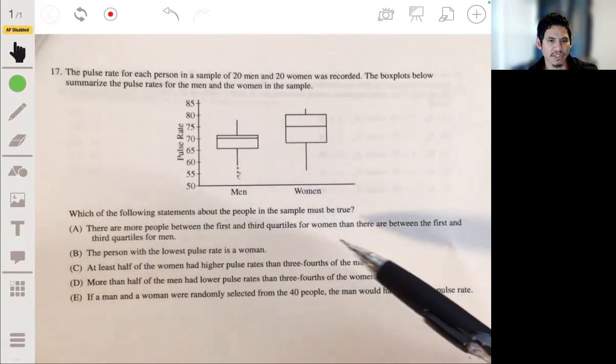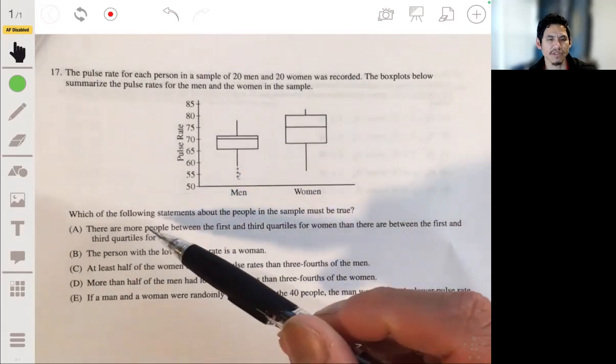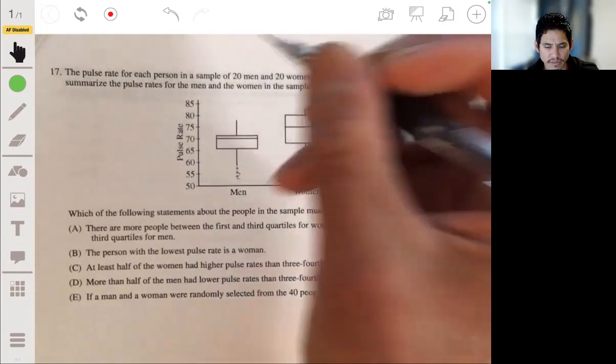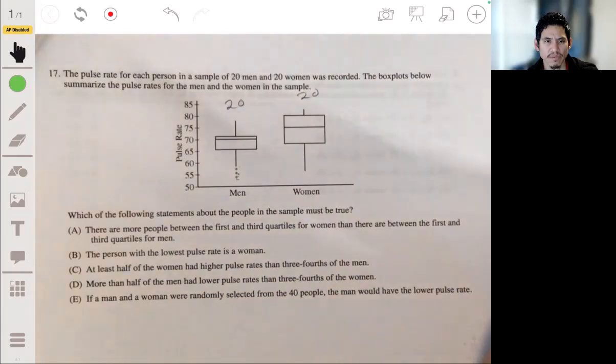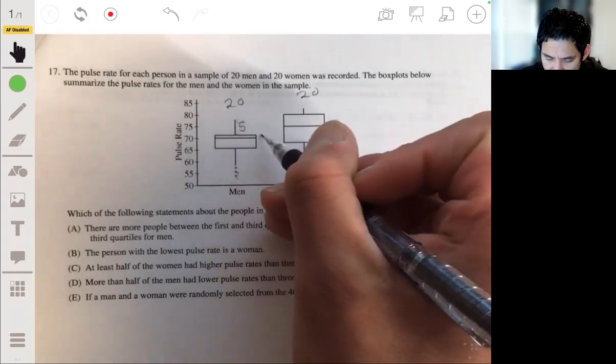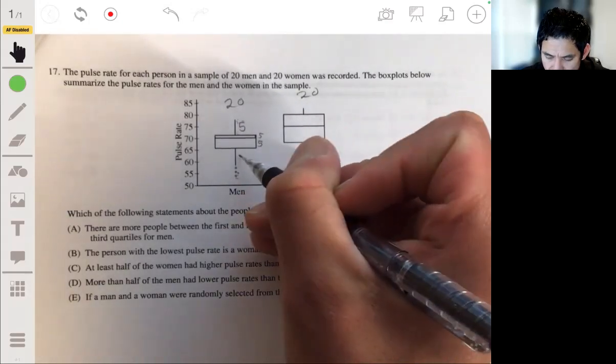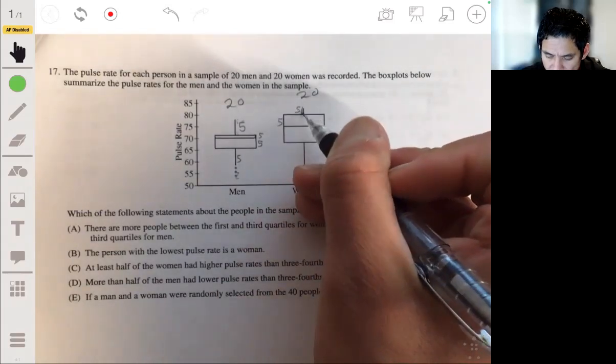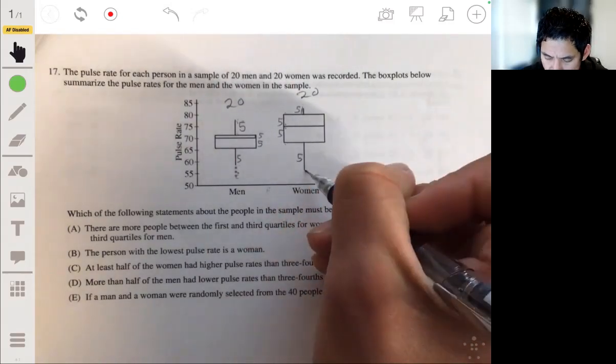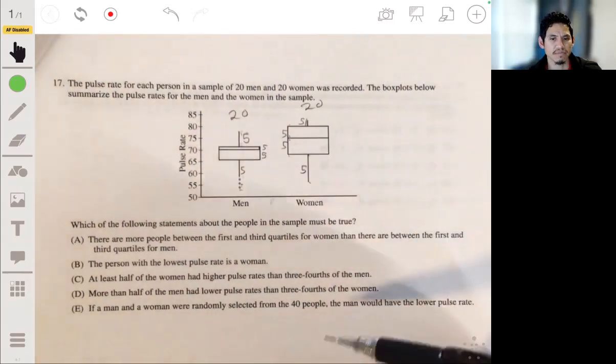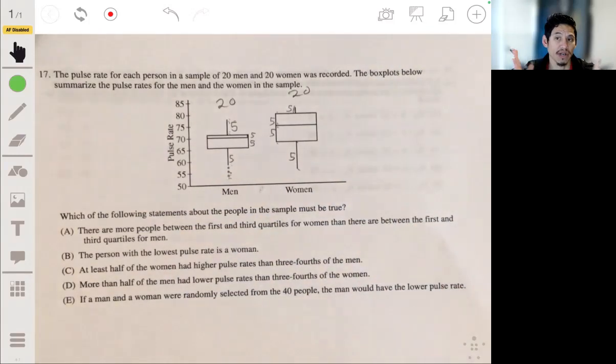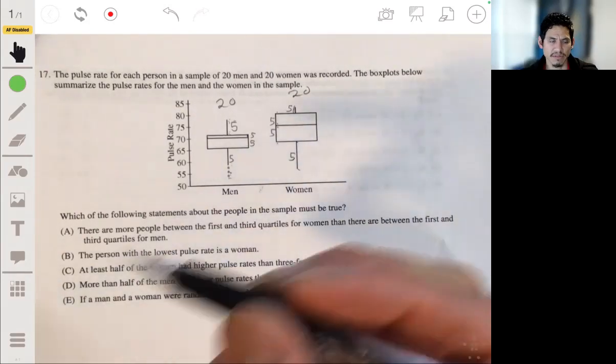There are more people between the first and third quartiles for women than there are between the first and third quartiles for men. Well, each group has 20 people, and there's five in each of those 25 percentiles. Five in here, five in this little spot, five in there, and another five in there. And women: five in here, between the median and Q3, between the median and Q1, between the minimum and Q1. So they're not, there's not going to be more people because they're both equal sized groups. The range is maybe different, but the number of people is the same. So it's not going to be A.